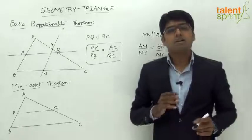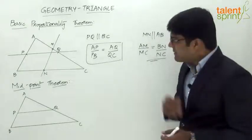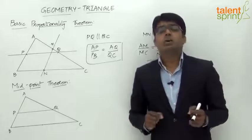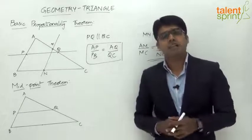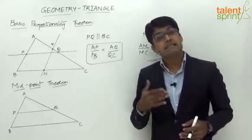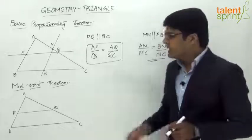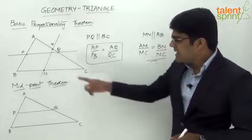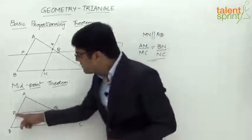The next theorem is the Midpoint Theorem, which states that the line joining the midpoints of any two sides of a triangle will always be parallel to the third side, and its length will be half the length of the third side. Let's look at this with the help of a simple example. ABC is a triangle.